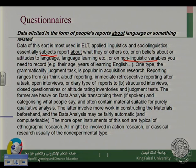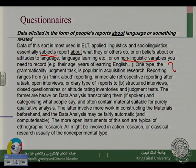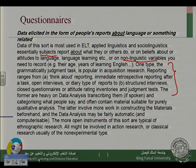One type of data collection tool is the Grammaticality Judgment Task, which is popular in acquisition research. Reporting ranges from think-aloud reporting, to immediate retrospective reporting after a task, to open interviews or diary-type reports, to structured interviews, closed questionnaires, attitude rating inventories, and judgment tests. So here we have different tools to collect the same information. Unfortunately, we are not going to talk about all of them in detail. It's enough for now to know the advantages and disadvantages of questionnaires.